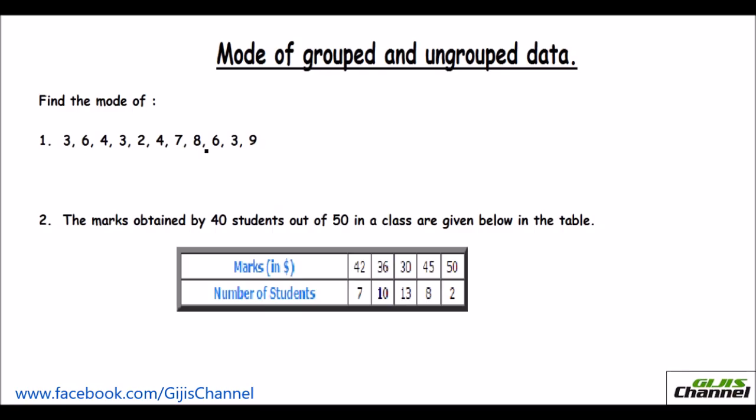In the first one, the raw data, that is ungrouped data, is given and you are asked to find the mode of it. It is so simple. Just see which number has been repeated more number of times. So to make it easier, what we do is, let us first arrange these numbers in ascending order. Now one look at it, you will know which number is repeated more number of times. Here you see 3 has been repeated 3 times and 4 is just 2 times and 6 is also just twice.